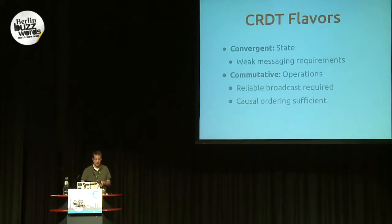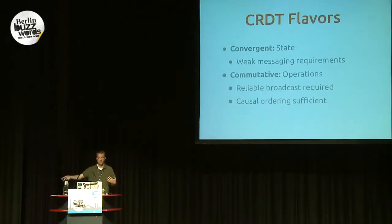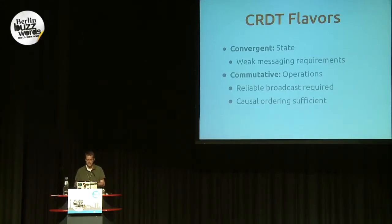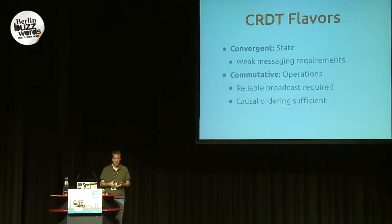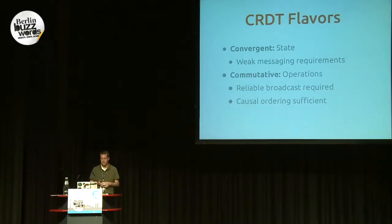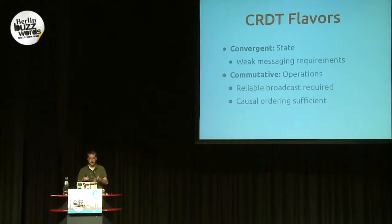Commutative types, on the other hand, rely on replicating commutative operations — operations are sent over the wire rather than state, more like commands: add this thing, remove this thing. The trade-off with commutative data types is that they rely on systems that have reliable broadcast. If you have some sort of reliable messaging channel that ensures delivery, commutative data types work well. The interesting thing is they don't need a total ordering in a global sense — they only need a local causal ordering: this event came after this one locally at this given replica.